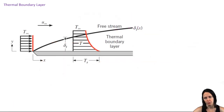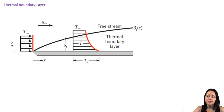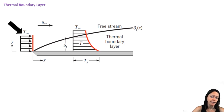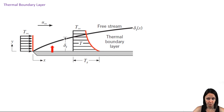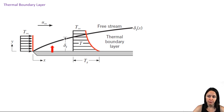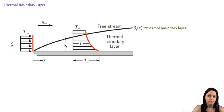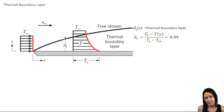Now let's talk about the thermal boundary layer. We have the same knife-edged plate, but this time we're considering that it's heated such that the temperature of the surface is TS. The free stream is at some uniform temperature T-infinity, and as the fluid flows over the plate, heat will be transferred between the plate and the fluid. If we were to look at the fluid, as we move away from the plate in the y-direction, the temperature gets closer to the free stream temperature. We can define the thermal boundary layer such that (TS minus T at some location y) divided by (TS minus T-infinity) is equal to 0.99.